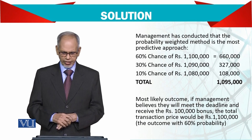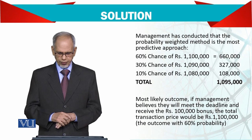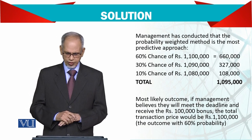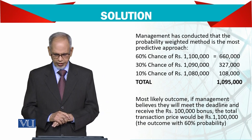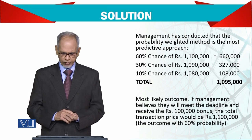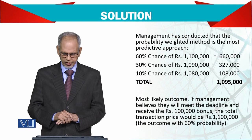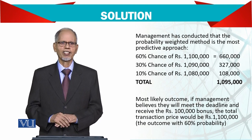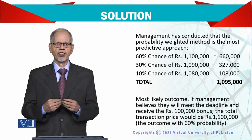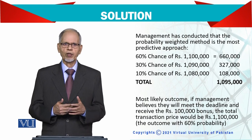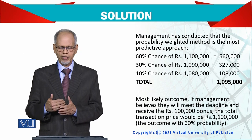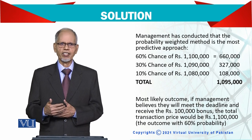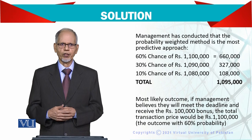Under the most likely outcome method, if management believes they will meet the deadline, the bonus received would be 100,000 rupees, making the total transaction price 1.1 million. However, since the probability of on-time completion is only 60%, you cannot simply record revenue at 1.1 million — you must first assess the probability of completing the job on time.